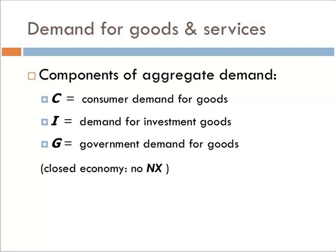The first thing to know is we're going to make a big simplifying assumption: this is a closed economy. What does that mean? There's no net exports. So the components of aggregate demand are consumption — the amount of goods and services consumers demand for final use — investment, the amount of goods and services that businesses demand in order to produce other stuff, and G, which is government spending on goods and services.